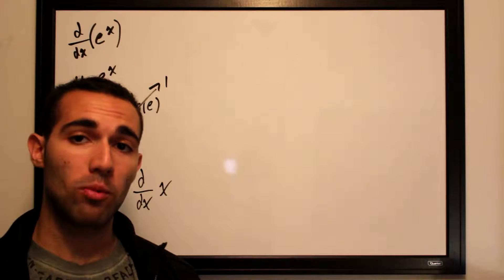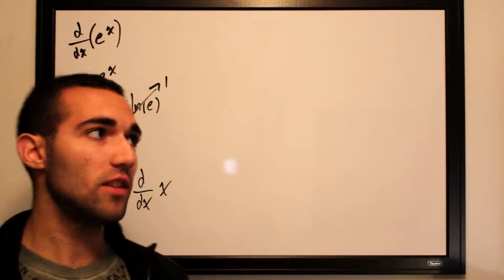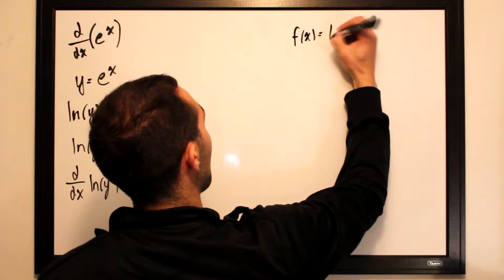Now this is a y function trapped within an ln function, so we will be using the chain rule in order to differentiate this, where our outer function f(x) will be ln of x.